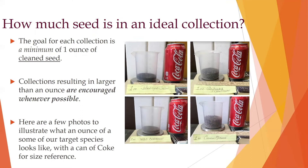So how much seed is in an ideal collection? The goal for each collection is a minimum of one ounce of clean seed. Thoroughly cleaning, testing, cataloging, and handling the seed is very time-consuming work, and our partners at Mason State Nursery recommend that collection result in at the very least one ounce of clean seed. Collections resulting in larger than an ounce are definitely encouraged whenever possible. Here are a few photos to illustrate what an ounce of a few of our target species looks like, with a can of pop for a size reference.